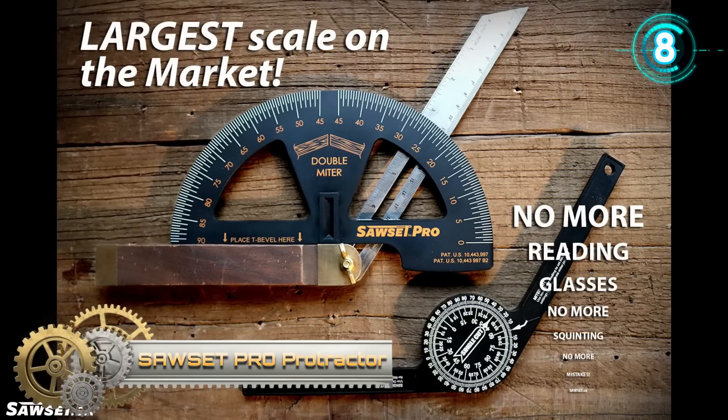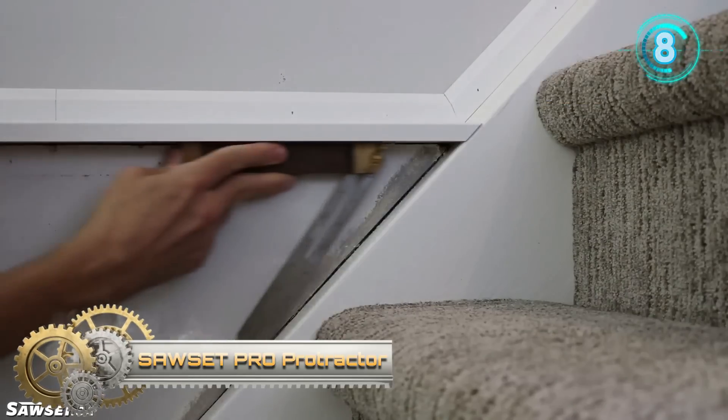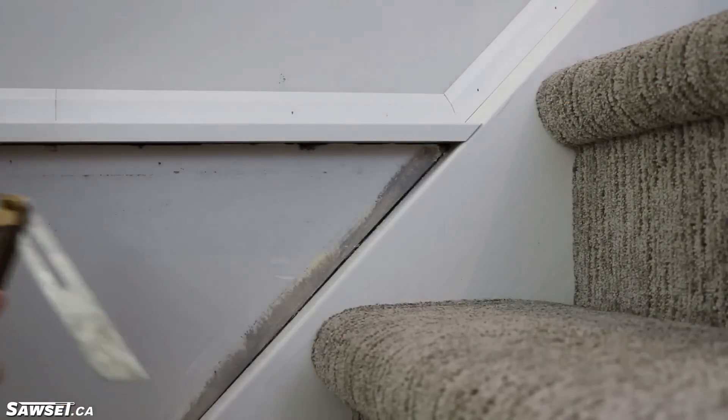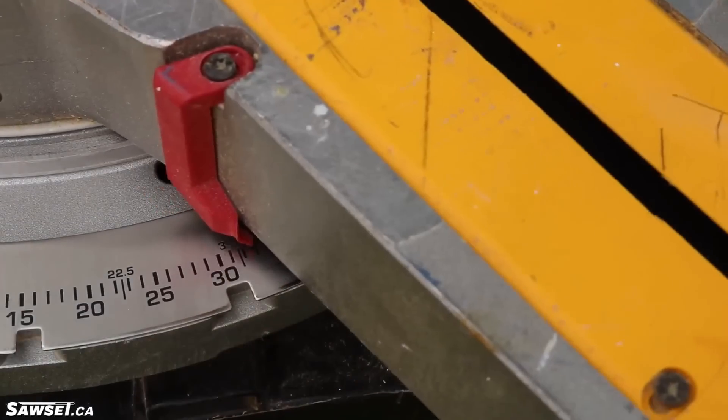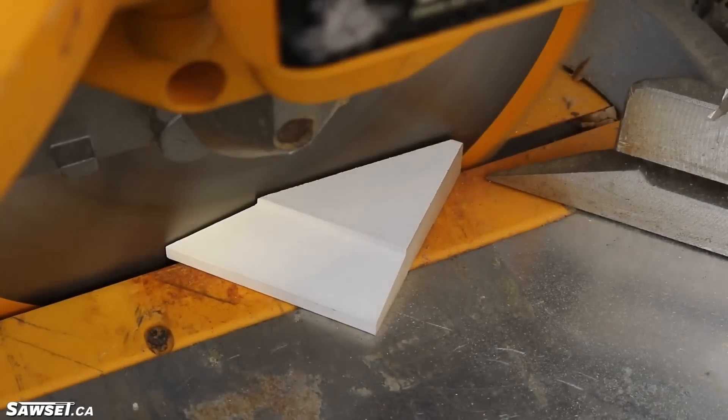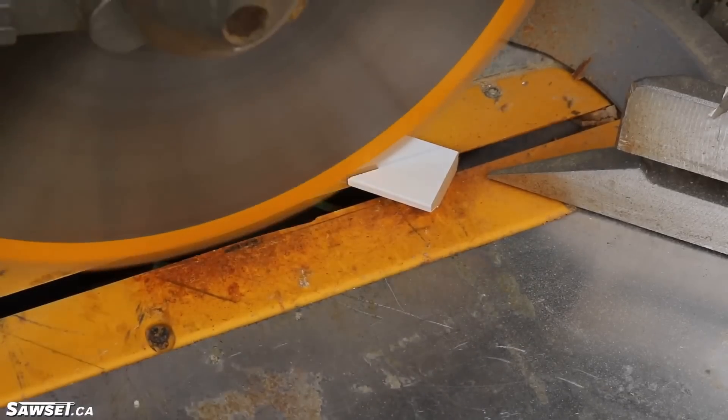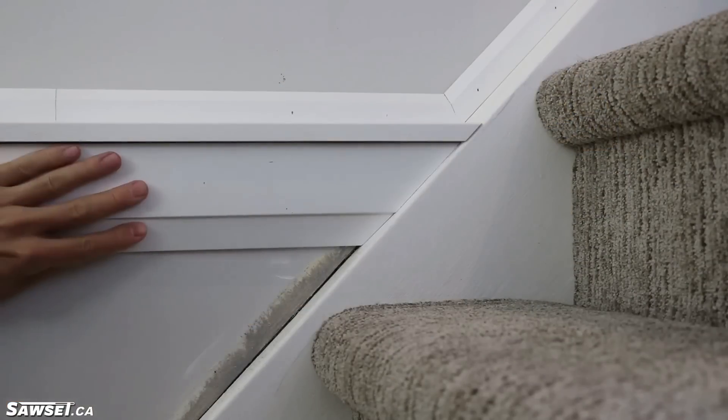Sawset Pro Protractor. This is a carpenter's protractor that has been redesigned to be compatible with any miter saw. Unlike a standard protractor, its scales have been calibrated to give miter saw settings with absolutely no math. The Sawset Pro is double-sided with two large easy-to-read scales, one for double miters and the other for single miters.